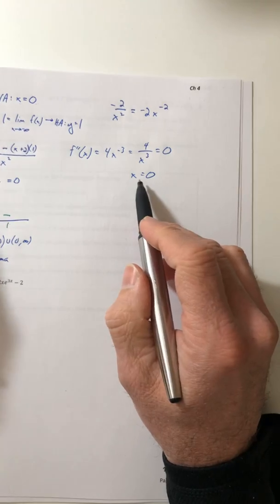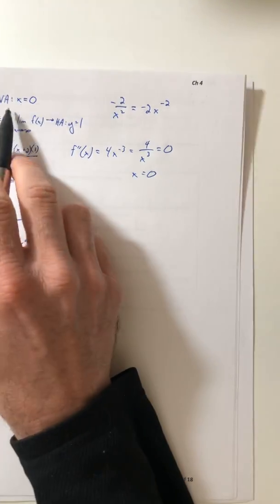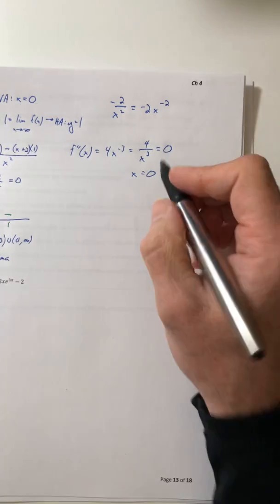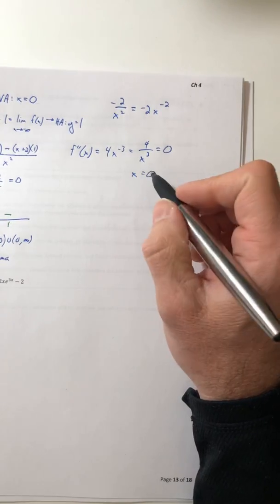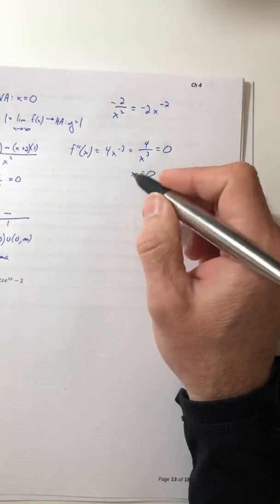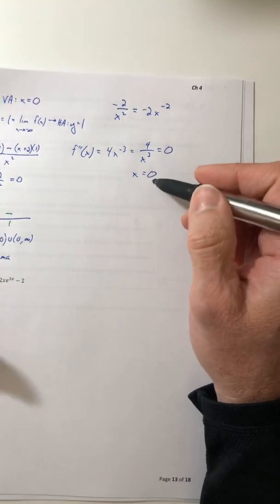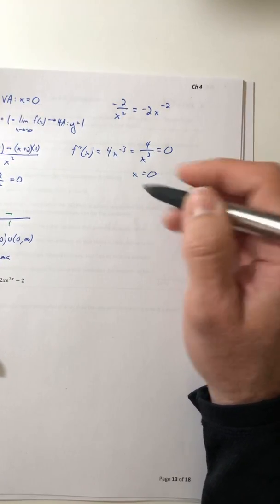So again, it's not going to yield an actual y value. That's where your asymptote is. So that's not an inflection point. The concavity could switch there, but it's not going to give you a point because there's no y value to go with it.